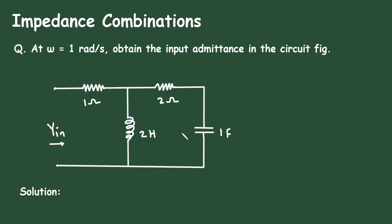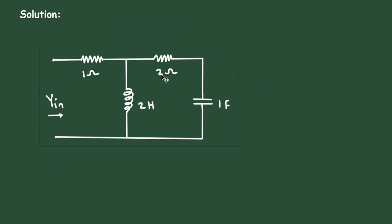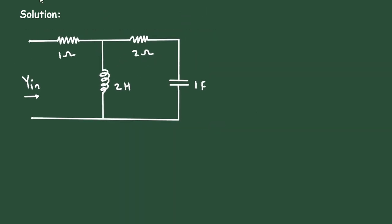Here, for the circuit, we have to find its input admittance solution. So first of all, we will convert this into its equivalent phasor domain. Convert this into phasor domain.